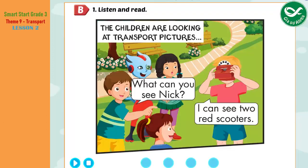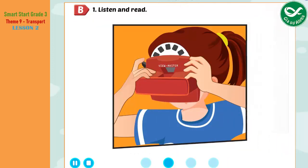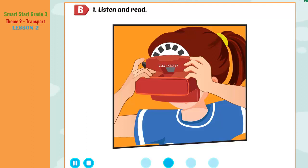B. One. Listen and read. The children are looking at transport pictures. Hey, everyone, come and look at my new toy! Wow! What can you see, Nick? I can see two red scooters. Can I try? Sure. What can you see, Lucy? I can see three blue rockets. Your turn, Mai. What can you see? I can see one grey ship.